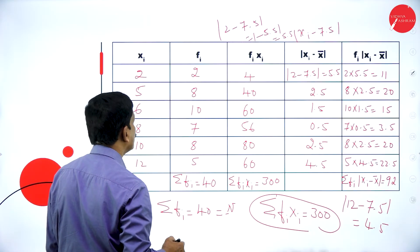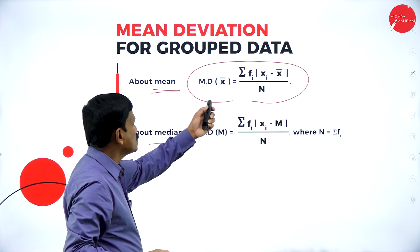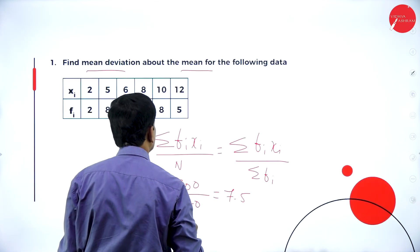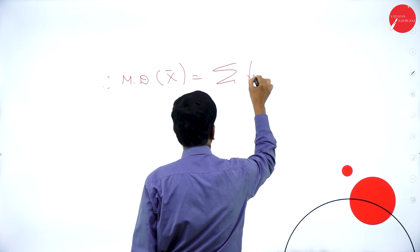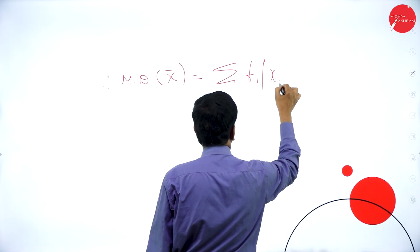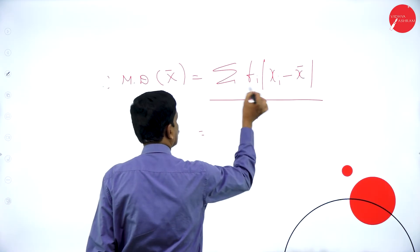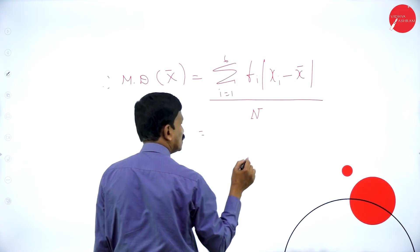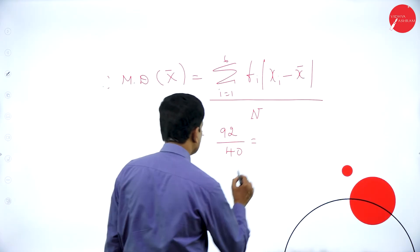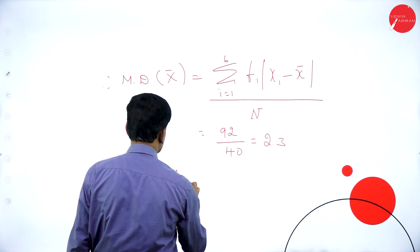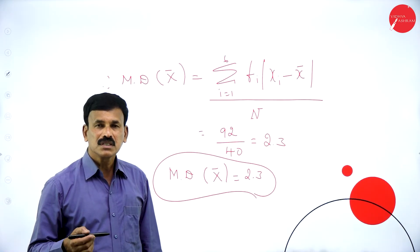Therefore, the mean deviation about the mean is given by: MD(x-bar) equals sigma fi * |xi minus x-bar| divided by n, with i equal to 1 to 6 because there are 6 entries. So this is 92 divided by 40, which equals 2.3. Therefore, the mean deviation about the mean is 2.3. If you do this correctly you will definitely get 7 or 8 marks in your final examination.